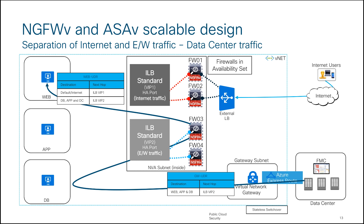In this video I explained how to achieve segregation of internet traffic and east-west traffic. This deployment is typically required by InfoSec teams: one set of firewalls handles inbound and outbound internet connections, while another set is dedicated only to internal production traffic. I hope you enjoyed this video — thank you for watching.